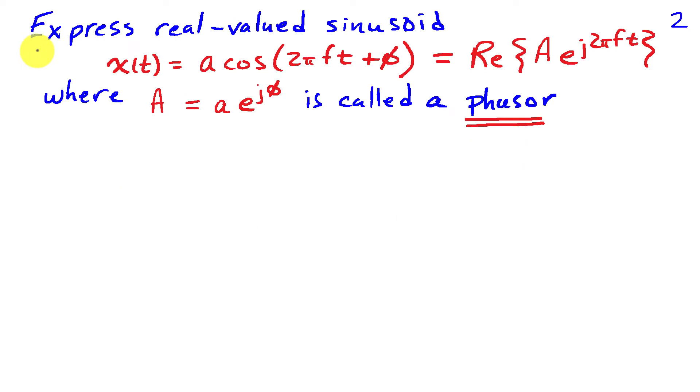Recall that we can express a real-valued sinusoid in terms of a complex-valued sinusoid. If I have x of t equals amplitude a cosine 2 pi f t plus phase phi, I can express that as the real part of a complex number a e to the j 2 pi f t, where a equals lowercase a e to the j phi. So that's the amplitude e to the j phase. This uppercase A is what we're going to call a phasor.